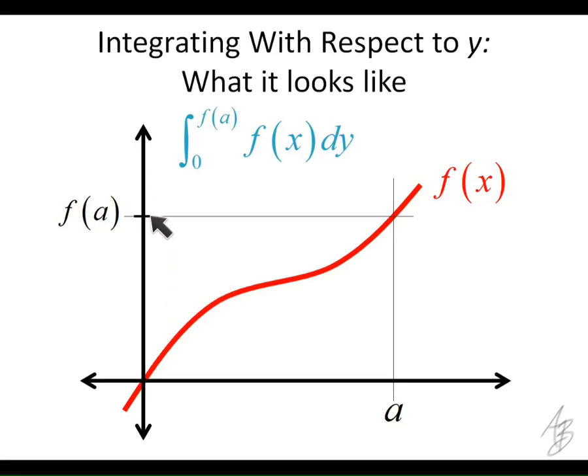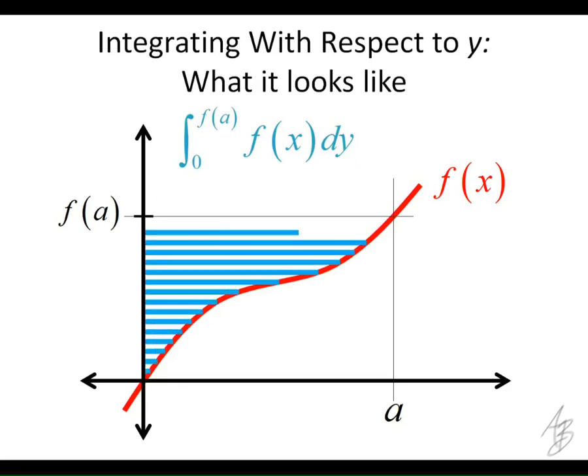And so our rectangles, our Riemann sum rectangles, are actually going to be horizontal. They're going to look like that. So when we integrate with respect to y, we're integrating by adding up rectangles that are perpendicular to the y-axis. So we end up with the picture that looks like this, and it gives us that blue area there.